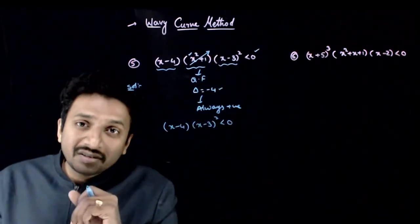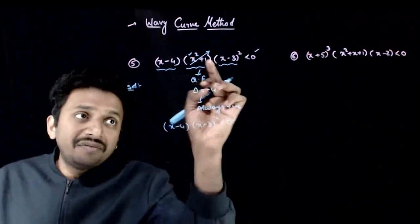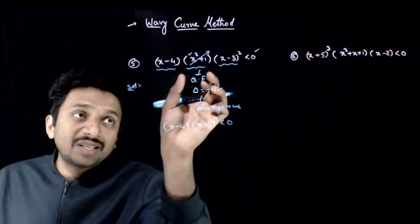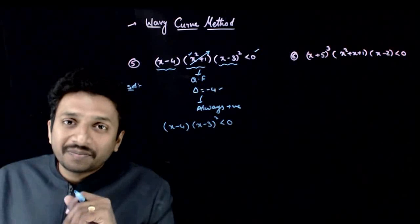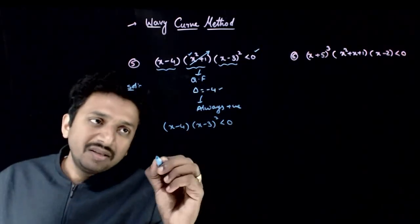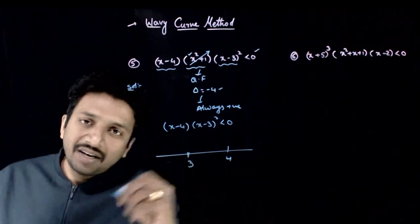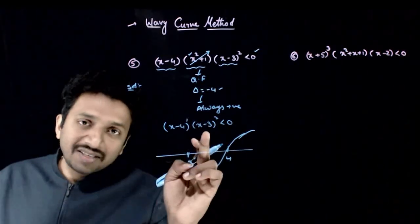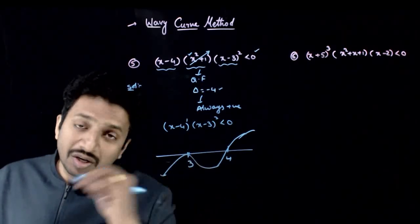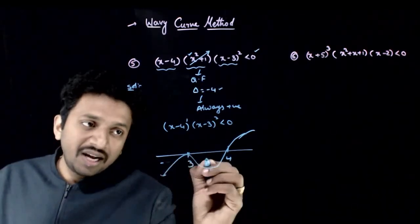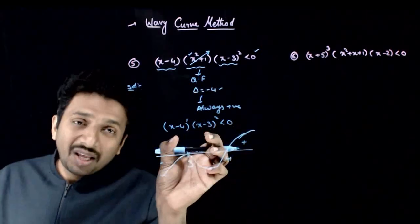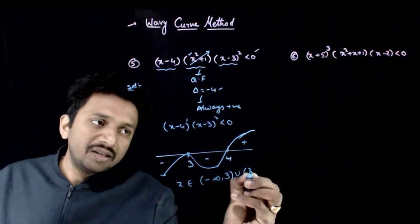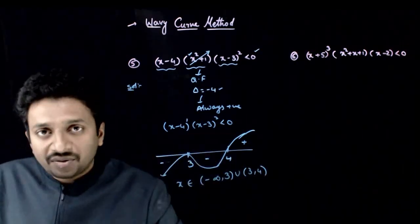Whenever you have quadratic factors, either try to factorize them, or if delta is negative and the leading coefficient is positive, the expression is always positive and you can neglect it. Now the inequality simplifies to (x − 4)(x − 3)² < 0. The critical points are 3 and 4. Starting from above the x-axis, at x = 4 the power is odd so the sign changes; at x = 3 the power is even so the sign does not change. The wavy curve gives: positive, negative, negative. Since we want less than 0, the answer is x belongs to (−∞, 3) union (3, 4).